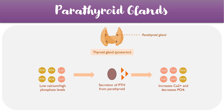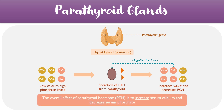Importantly, this whole process is governed by a negative feedback loop, so as the levels of calcium increase, it should feed back on the parathyroid gland to decrease PTH production. And this helps to keep the whole system in check.